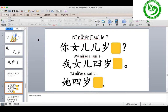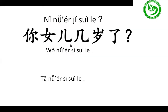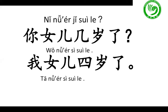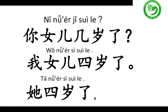How to answer the question 你女儿几岁了？ If you want to say my daughter is four years old, you say 我女儿四岁了. Or you can say she is four years old — 她四岁了. Use she in Chinese: 她. So both 我女儿四岁了 and 她四岁了 are correct answers.